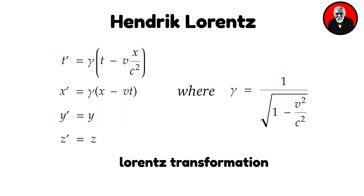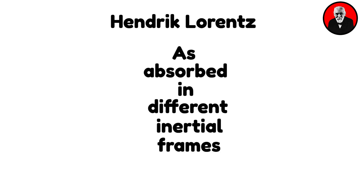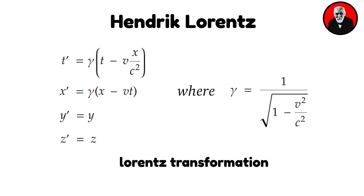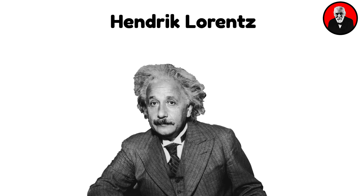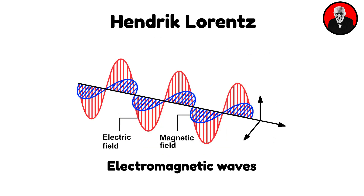In his efforts to explain the results of the Michelson-Morley experiment, Lorentz introduced transformations that relate the space and time coordinates of events, as observed in different inertial frames of reference. These transformations later became a cornerstone of Albert Einstein's special theory of relativity. Lorentz also proposed a model in which electrons were responsible for the propagation of electromagnetic waves through matter, instrumental in advancing the understanding of electrical and optical phenomena.